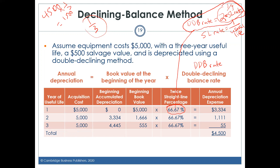There's also a triple declining balance method using three times the straight-line rate. But most companies that use an accelerated method use the double declining balance method.